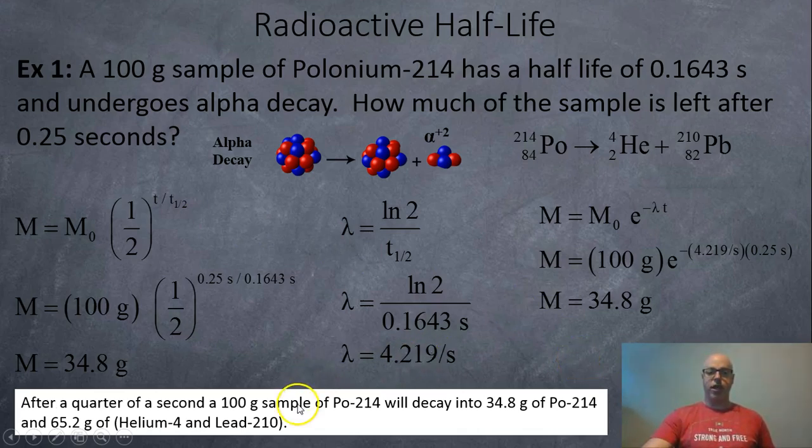So after a quarter of a second, the 100 gram sample of polonium turns into 34.8 grams of polonium and 65.2 grams of helium-4 and lead-210.